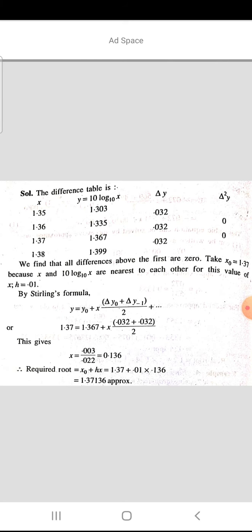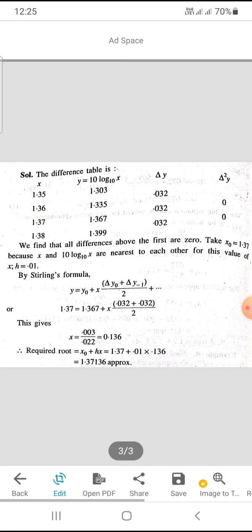We find that all differences above the first are 0. Now take x₀ = 1.37 because x and 10log₁₀(x) are nearest to each other for this value of x. h = 0.01. So by Stirling's formula, y = y₀ + x(Δy₀ + Δy₋₁)/2.